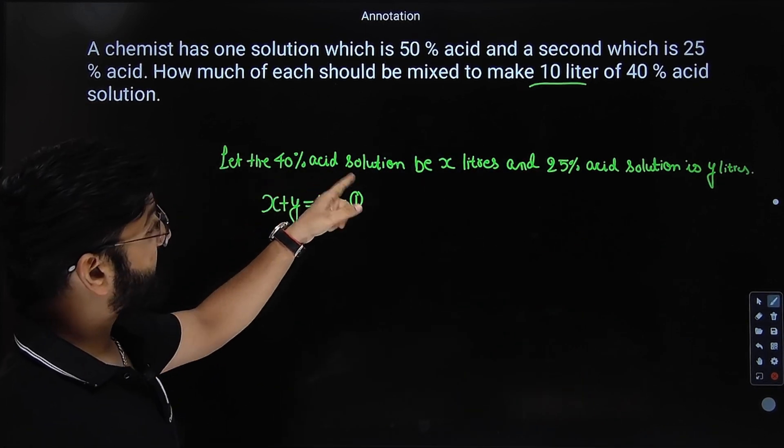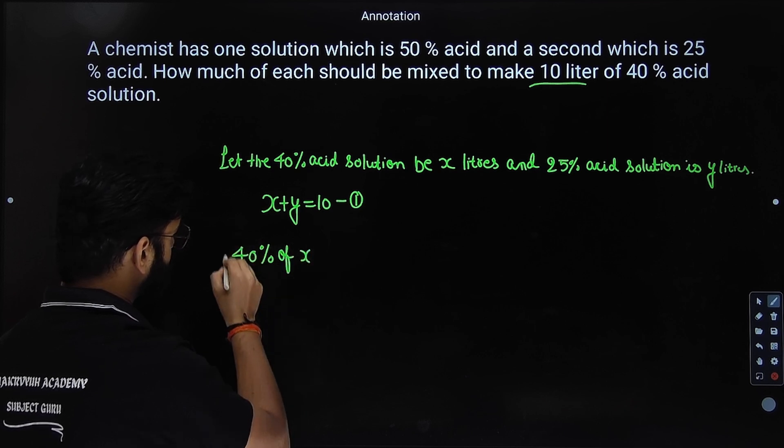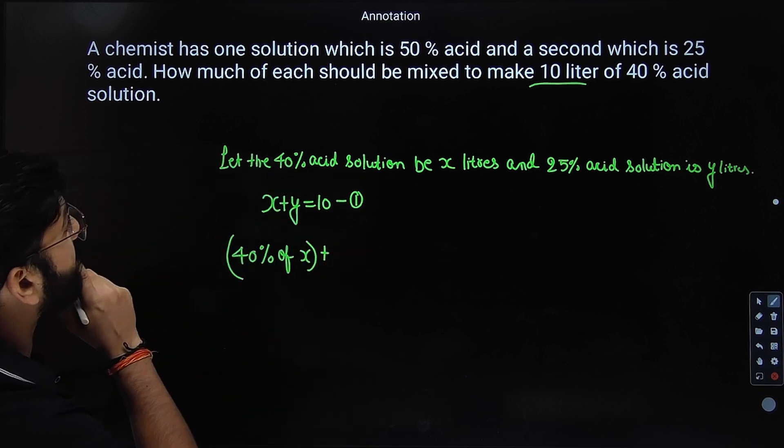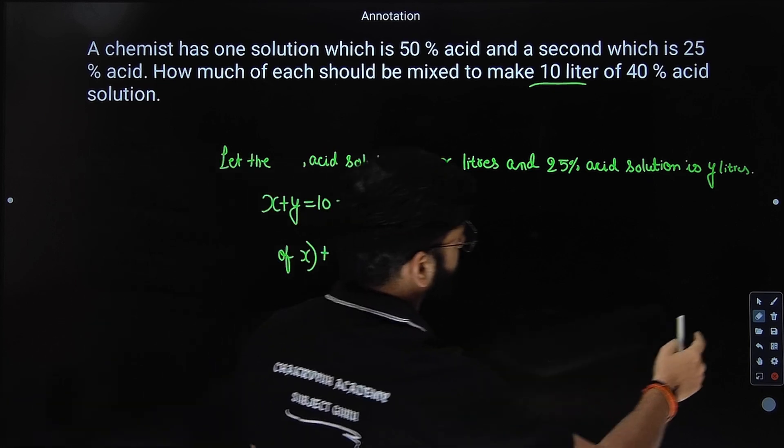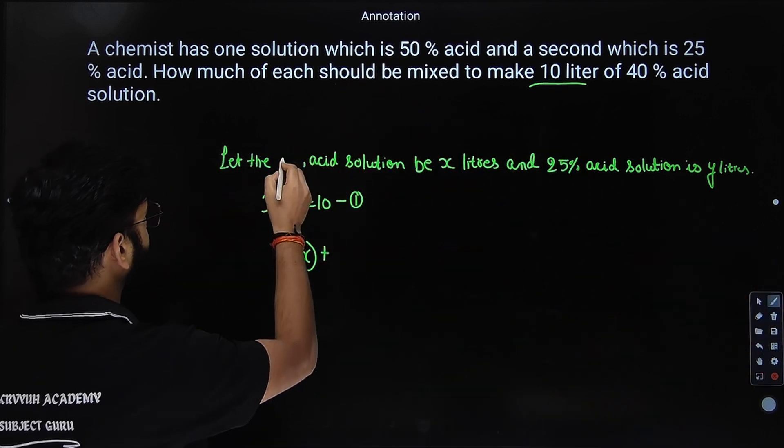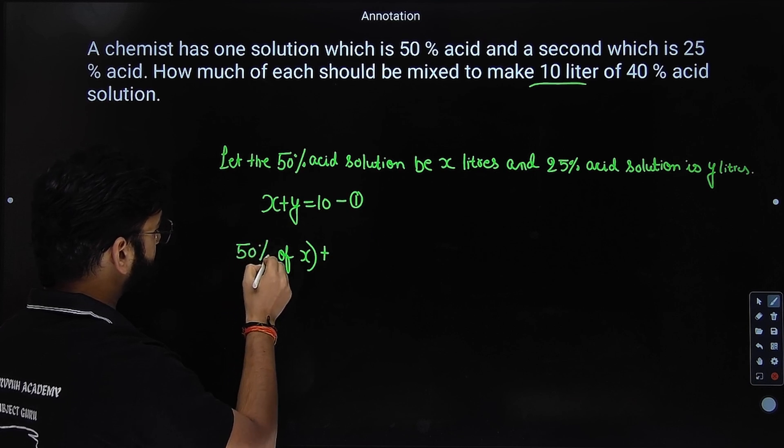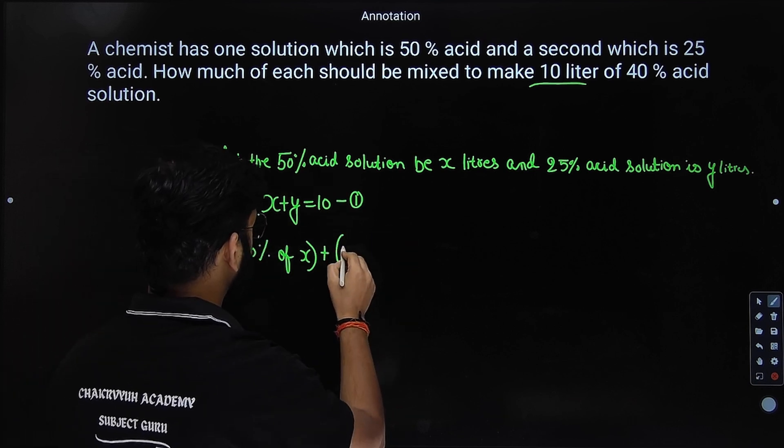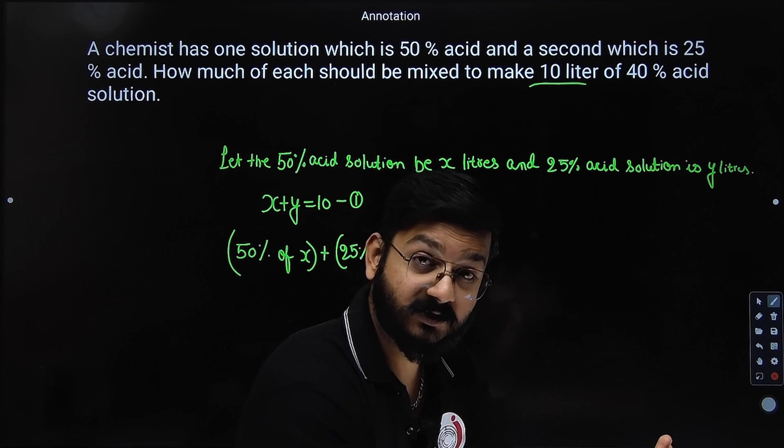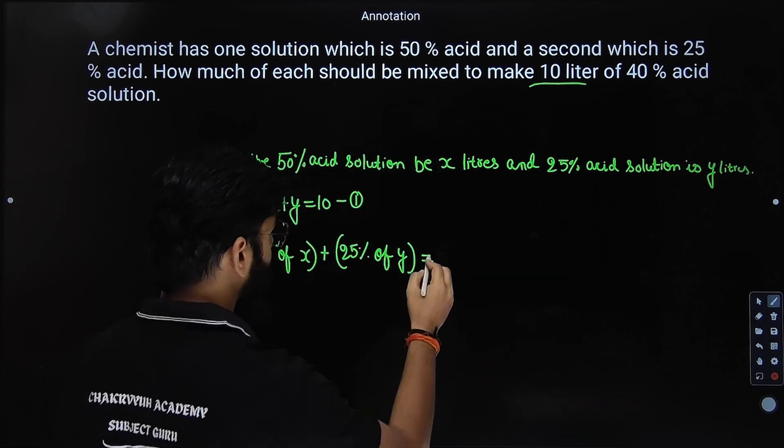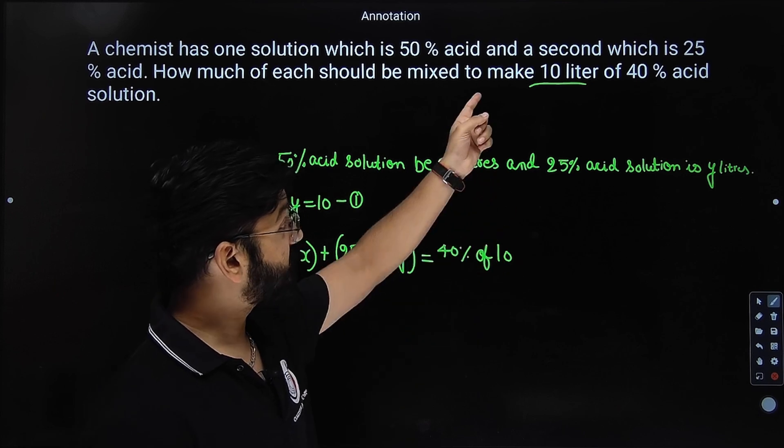So 50% acid solution, 50% of x liters plus 25% of y is equal to what? 40% acid solution, right? What is the total volume? 10 liters. So it will be 40% of 10 liters. So the combination of this will give this final outcome which is written in the question.